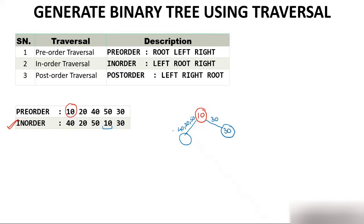Now I'll follow the pre-order. My work for in-order is over. I'll go to pre-order, and in pre-order root starts from the beginning. Among 40, 20, and 50, which is coming first? 20 is coming first. So among all three elements, 20 has acquired the root position of the left subtree. Now two elements remain: 40 is left of 20, and 50 is right of 20.